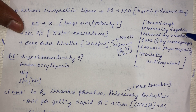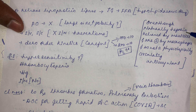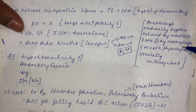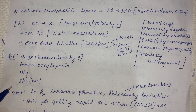Even though heparin is naturally released by mast cells, it is not considered a physiologically active anti-coagulant. As soon as heparin is released by mast cells, it is rapidly metabolized by circulating macrophages. Therefore, it cannot be called a physiologically circulating anti-coagulant.